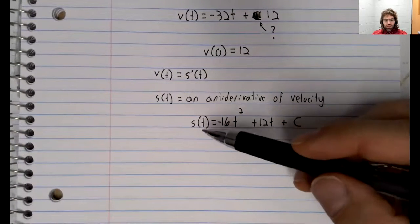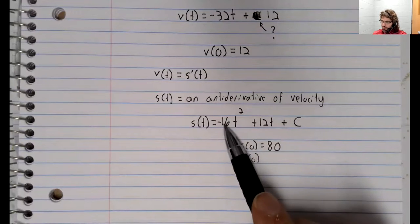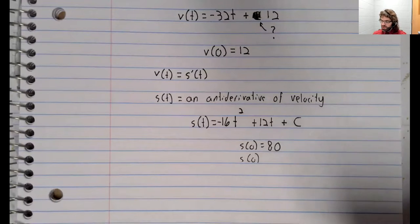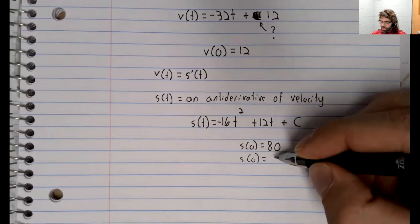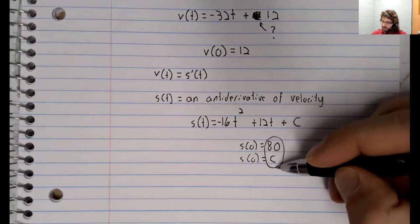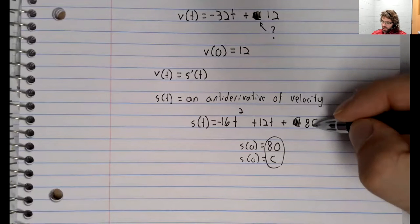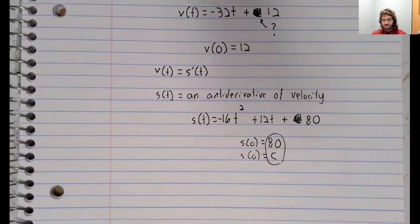S of zero equals 80. And if you plug zero into this, you get zero, zero, C. So 80 equals C.